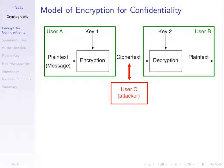The analysis of decryption from the attacker's perspective is called cryptanalysis, and together cryptography and cryptanalysis is called cryptology. When we design encryption algorithms, we make some assumptions. The first: we assume that user C, the attacker, can observe everything sent between A and B.